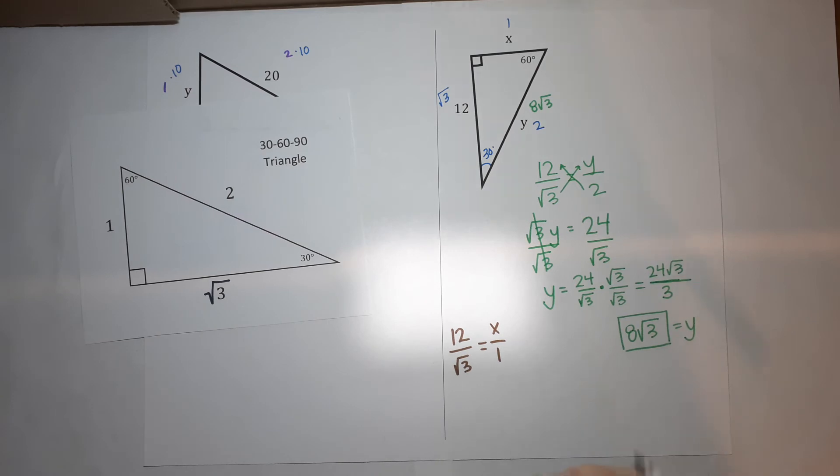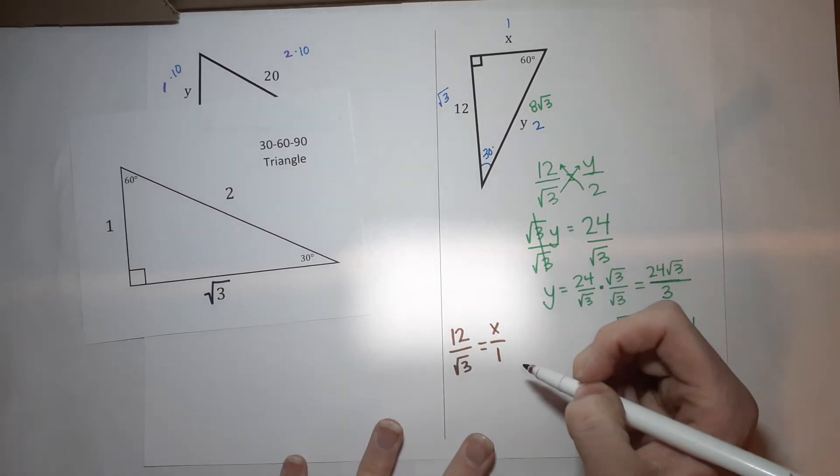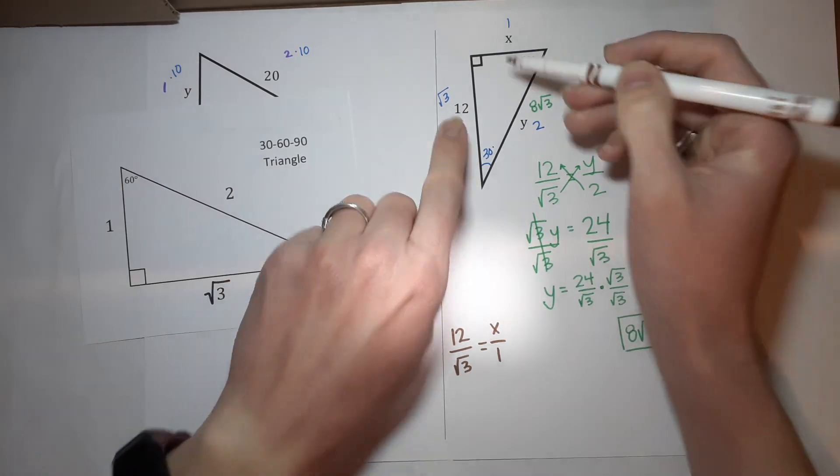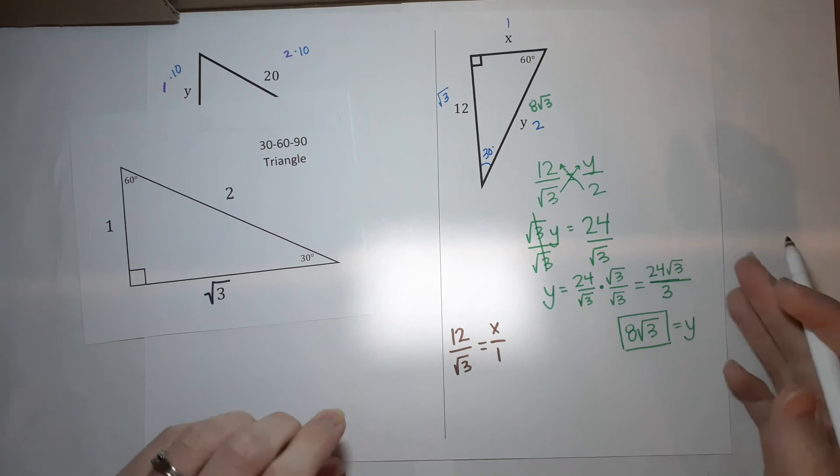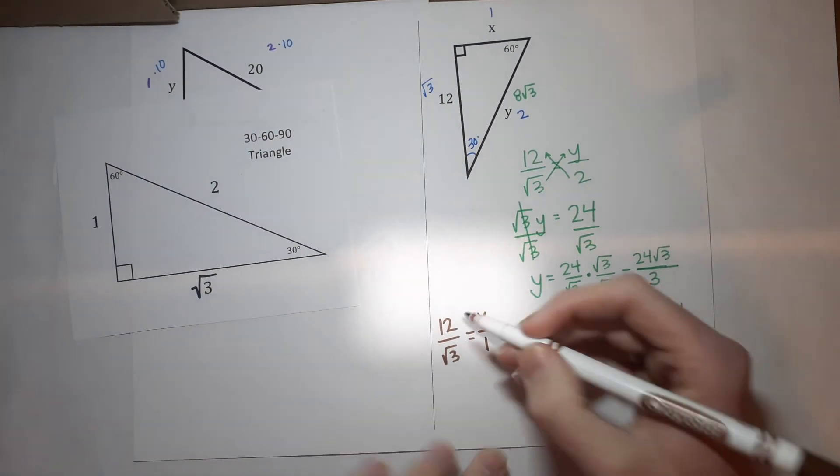Now, this is technically done because it's over 1, but let's go ahead and multiply it out. So remember, I put both my black ones on top, the blue ones on bottom. So let's go ahead and cross multiply.